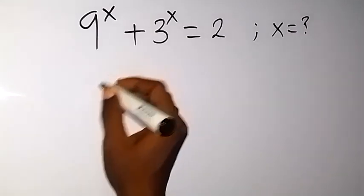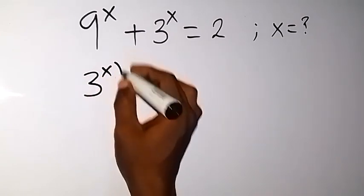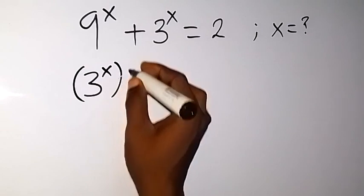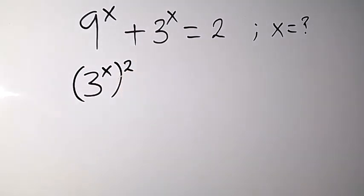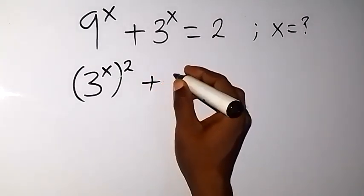We can write this as 3 raised to power x, then raised to power 2, because 9 can be written as 3 squared. Then we have plus 3 raised to power x equals to 2.